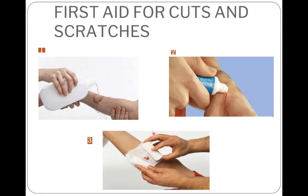If the cut is very deep and bleeding heavily, first wash the wound with water, then clean the area with soap. Try to stop the bleeding by pressing down on the wound with a pad of clean cloth or cotton wool until the bleeding stops. If the wound does not stop bleeding, a bandage or strip of cord called a tourniquet is used to cut off the flow of blood from the heart to the wound — it is wrapped firmly. In case of a deep wound, rush to the doctor, as the doctor may have to stitch the wound to close it.